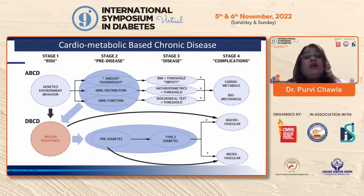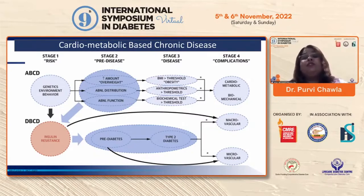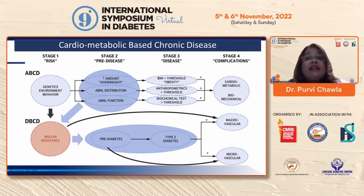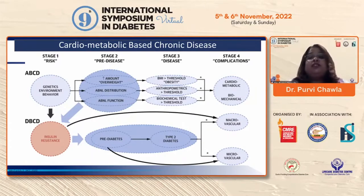From stage one — at-risk population — to pre-diabetes, ABCD (adipose-based cardiometabolic disease) then progresses further as obesity increases, leading to disease manifestation and cardiometabolic as well as biomechanical complications at stage four. This all feeds into diabetes-based cardiometabolic disease. It's all based in insulin resistance, which leads to pre-diabetes, then diabetes, and then macro- and microvascular complications.